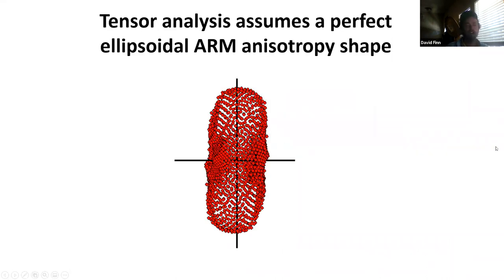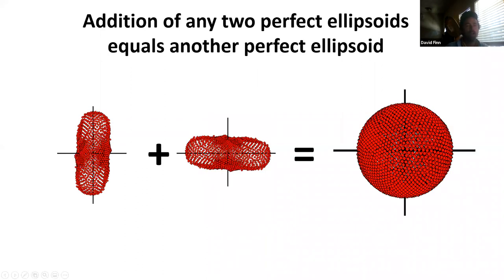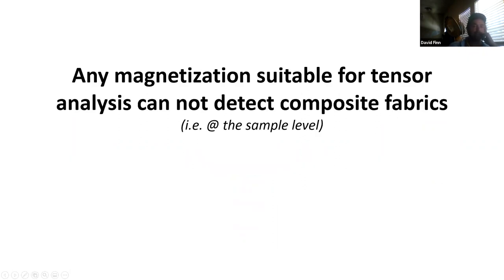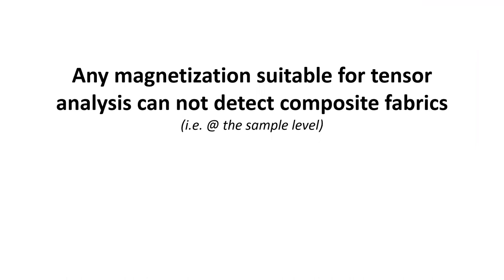The last topic is ARM anisotropy. When we do ARM anisotropy we normally assume the anisotropy is represented by a perfect ellipsoid, and with this assumption we can use tensor analysis to find the principal components from a set of measured ARMs. These plots show the property that addition of any two perfect ellipsoids yields another perfect ellipsoid, and similarly addition of two non-ellipsoidal shapes yields another non-ellipsoidal shape. Any type of magnetization suitable for tensor analysis could never be used to detect a composite fabric at the sample level.